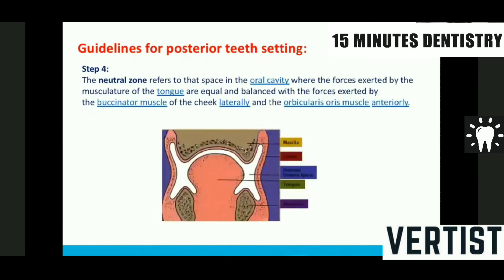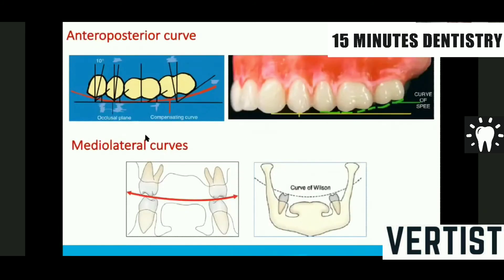These are all guidelines to be followed so that the load is transferred to exactly the center of the ridge, reducing lateral forces and minimizing ridge resorption. The fourth principle is to arrange the teeth in the neutral zone — the zone between the force generated by the tongue from inside and the buccinator and orbicularis oris from the outside. We have two curves: anteroposterior and mediolateral curves. Now we start the posterior teeth arrangement.